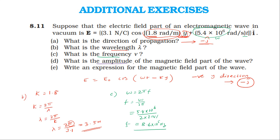The next part asks for the amplitude of the magnetic field. Using the relation c = E₀/B₀, so B₀ = E₀/c = 3.1 divided by 3 × 10^8, which gives us approximately 1.03 × 10^−8 Tesla.